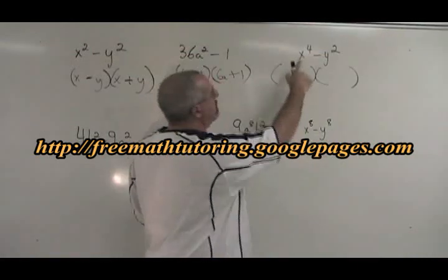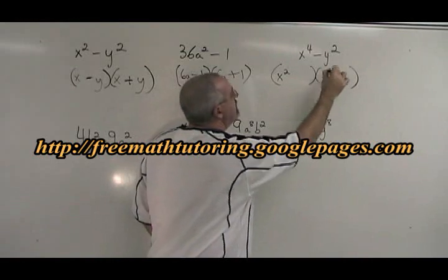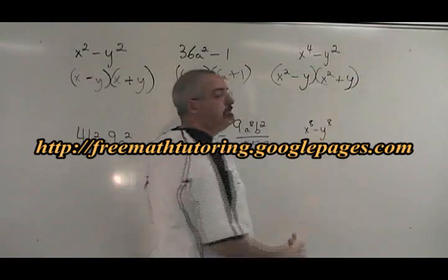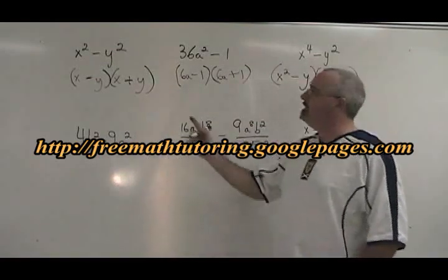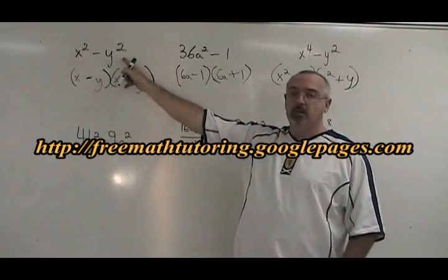Here, the square root of x to the 4 is x squared. And the square root of y squared is y. One minus, one plus. Each of these can be verified by multiplying the two binomials together, and you will see that they equal the original question.